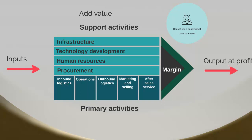All of this goes together, plus the margin, and that becomes the profit the company receives from the consumer at the end. We take all these inputs, all these raw materials and resources, add all these different functions to them, and that allows us to charge a profit margin. That's how we, as an organization, add value and make our money.